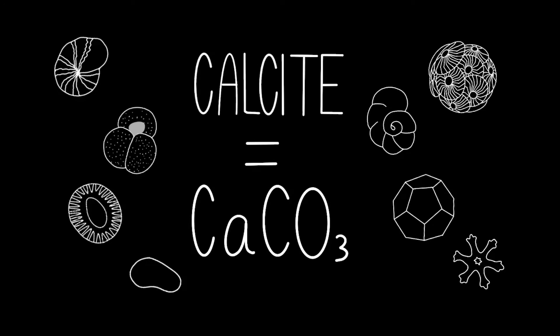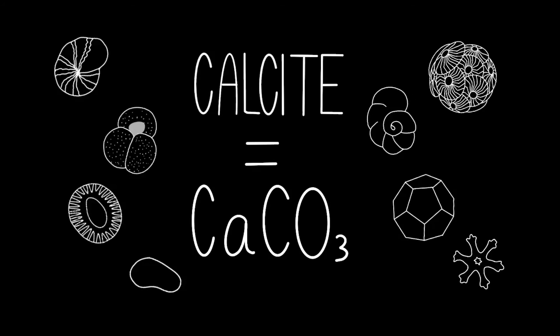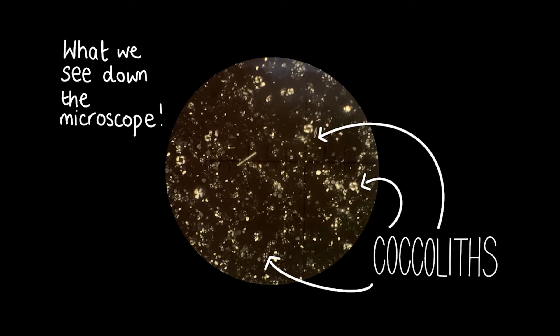Foraminifera and ostracods shells are also made up of it too. When we look down the microscope, it is usually the single coccolith plates that we are able to see.